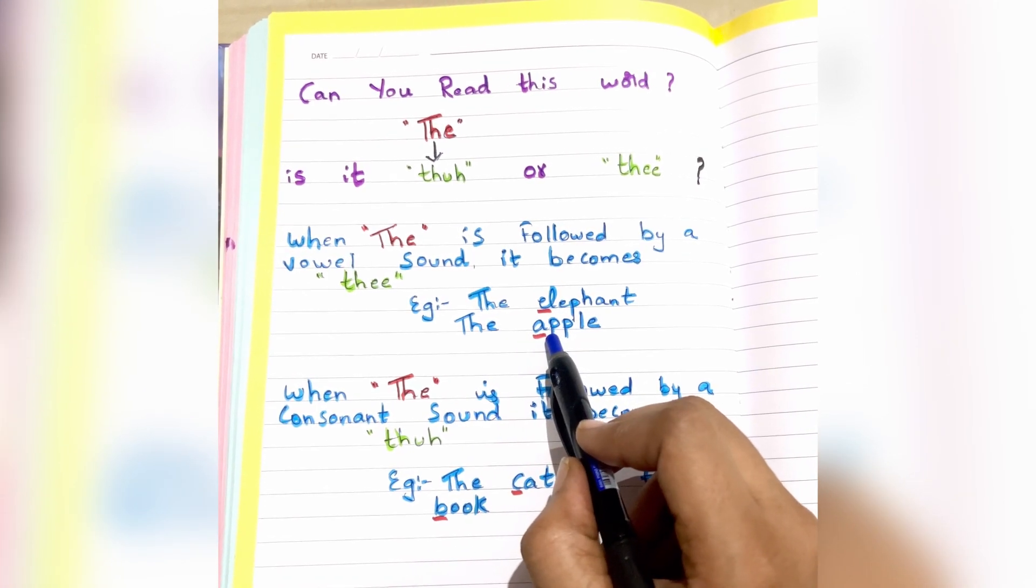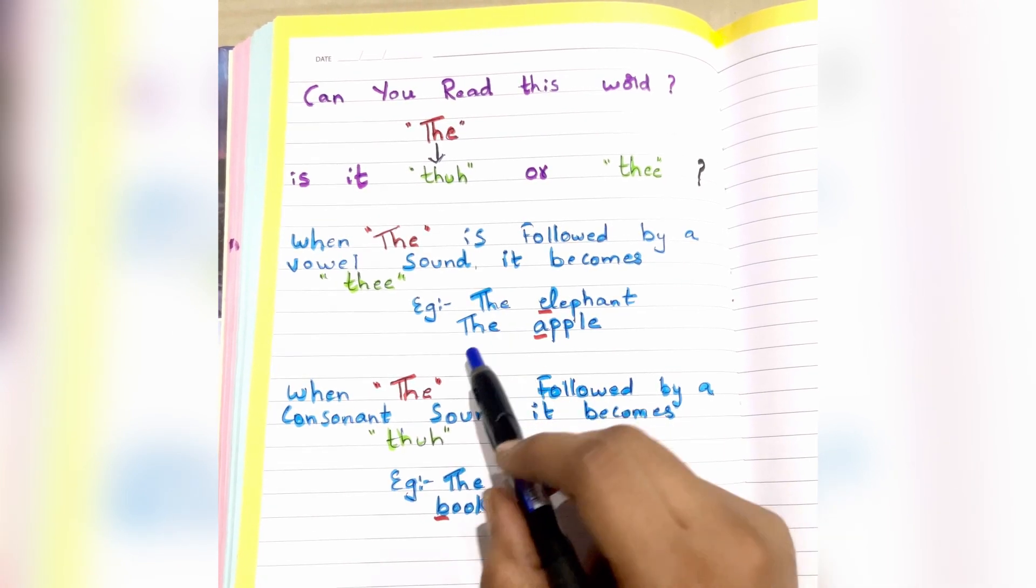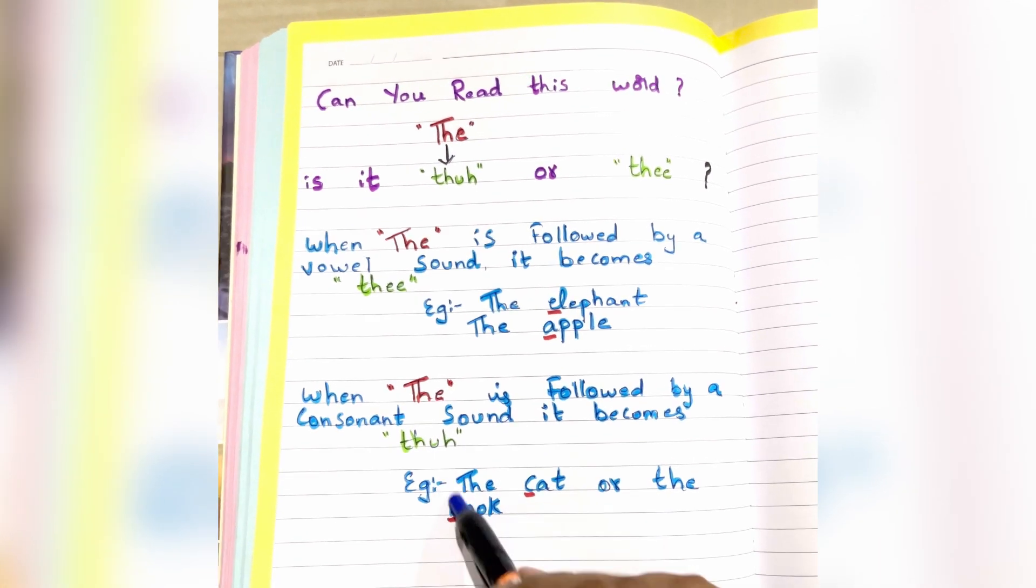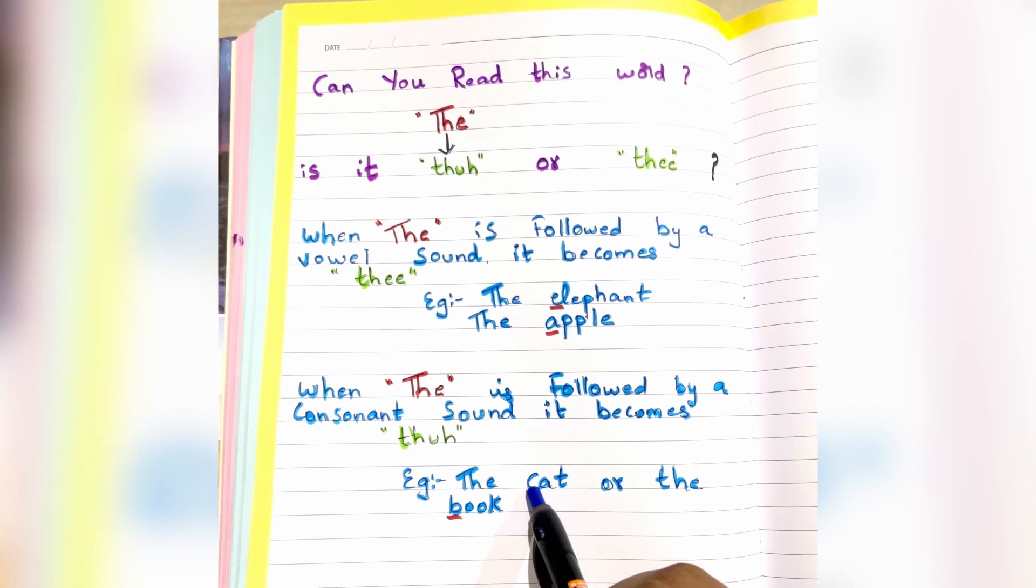Here, E is a vowel, A is a vowel. When it's followed by a vowel, we call it 'thee'. When 'the' is followed by a consonant sound, it becomes 'thuh'. For example: the cat or the book. Here, C is a consonant.